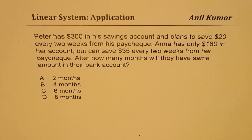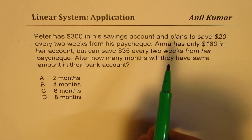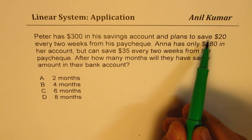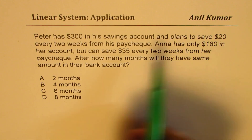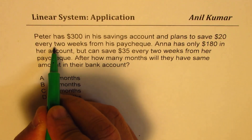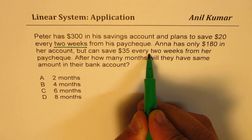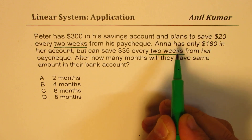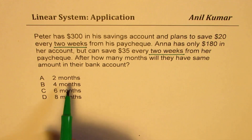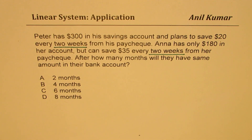Now, when you solve such questions, you have to look into units very carefully. We are saying savings of $20 every two weeks — savings are being done every two weeks, and the answer is in months. That is important to understand.